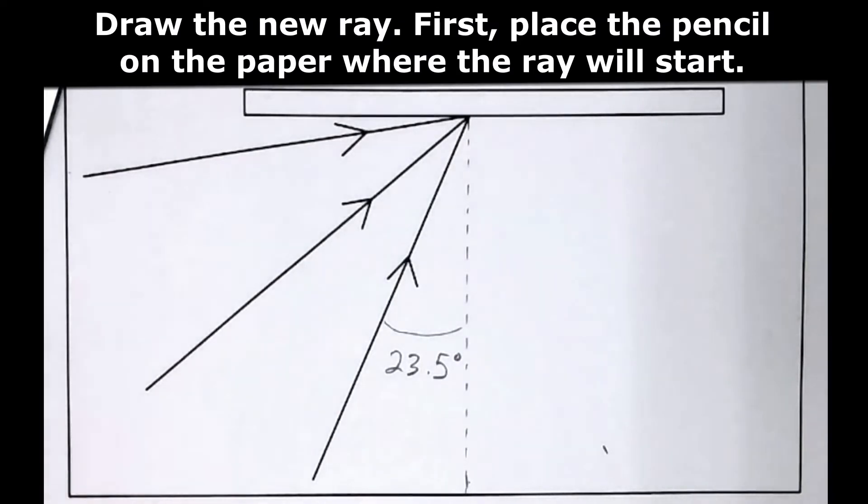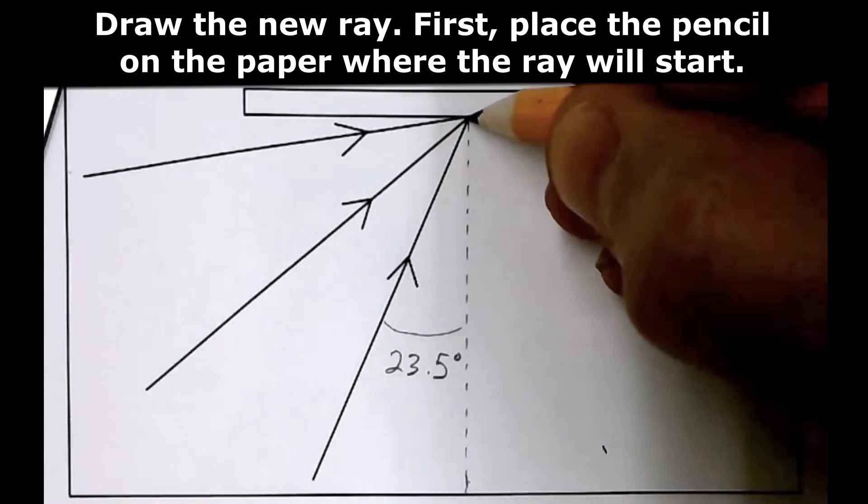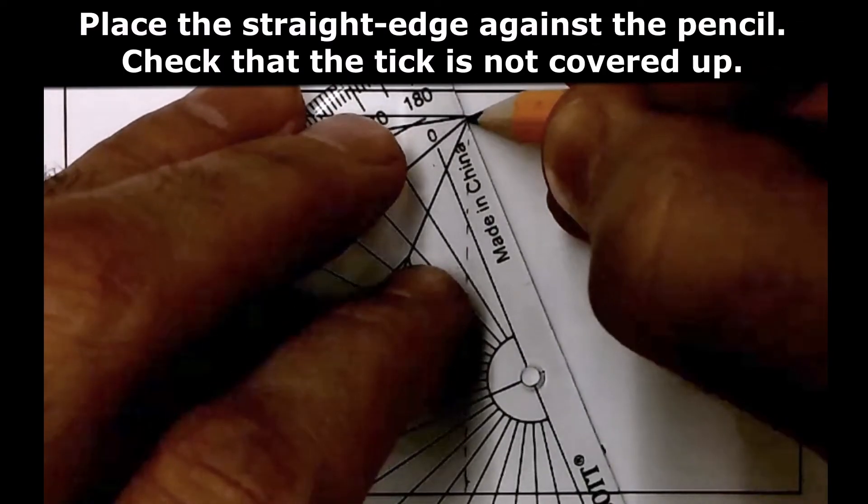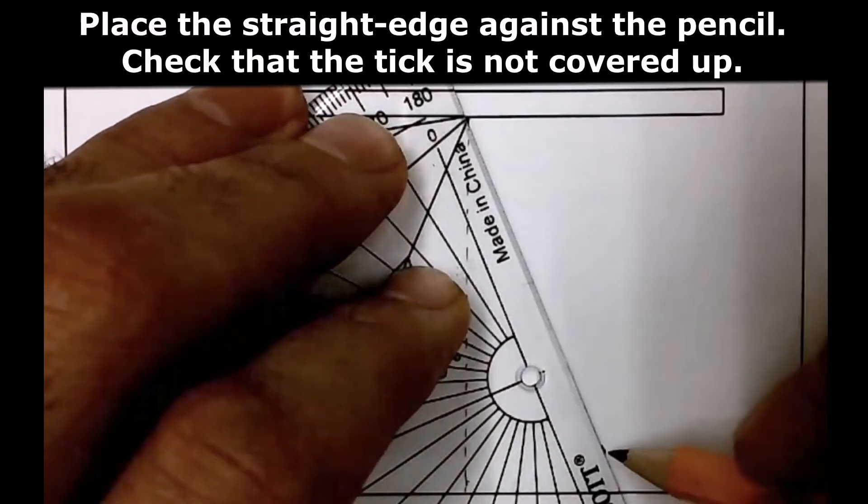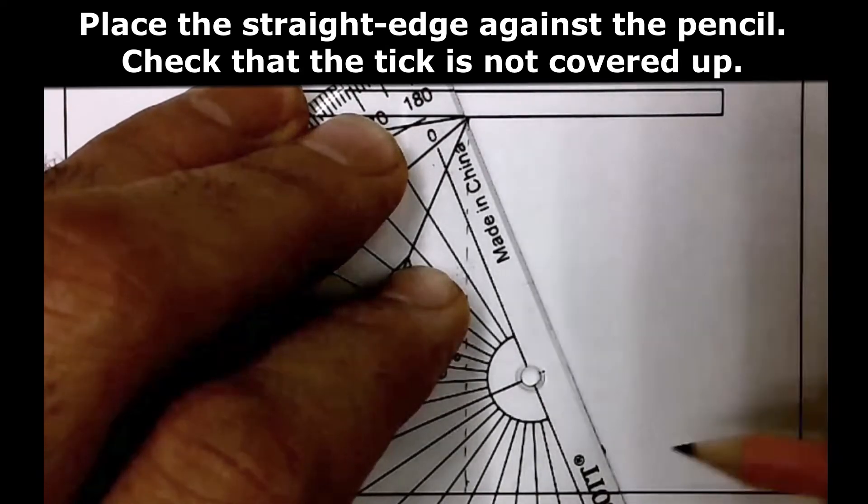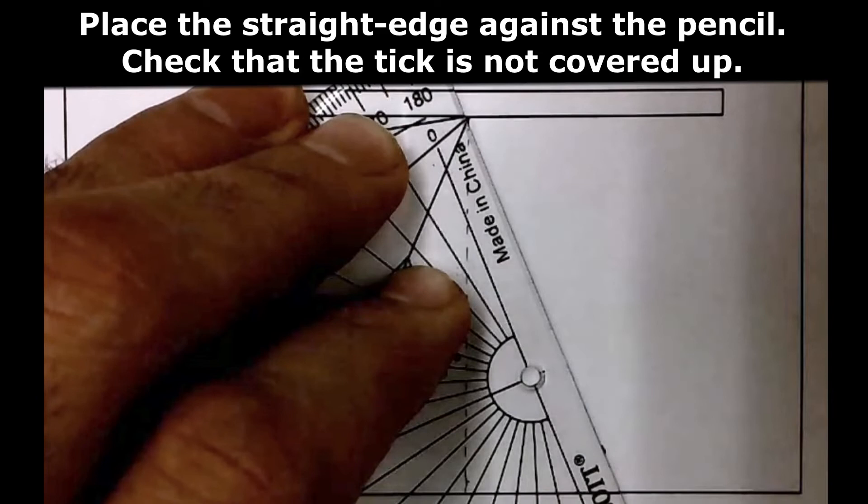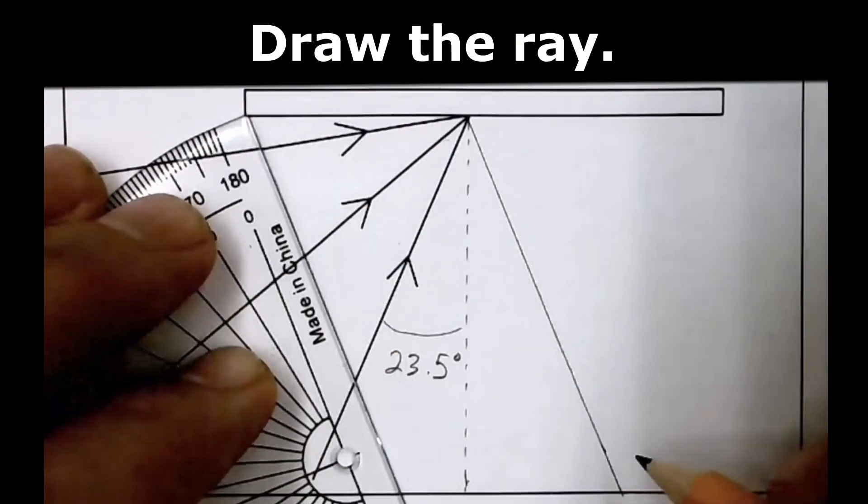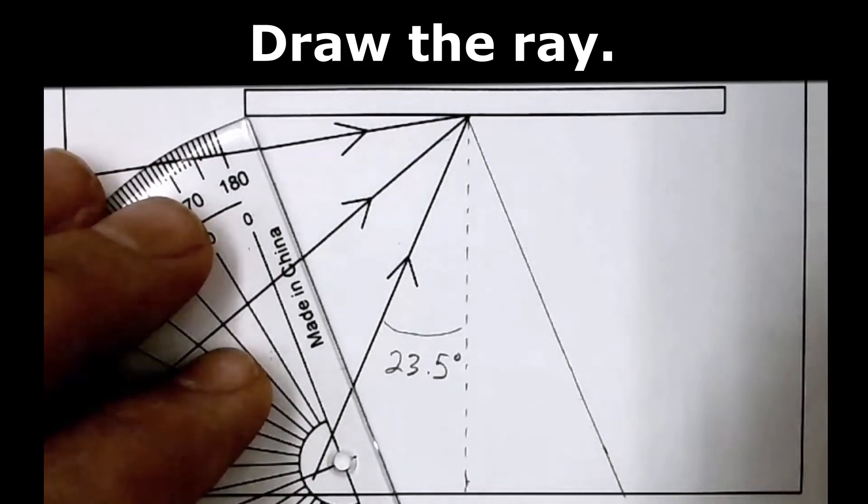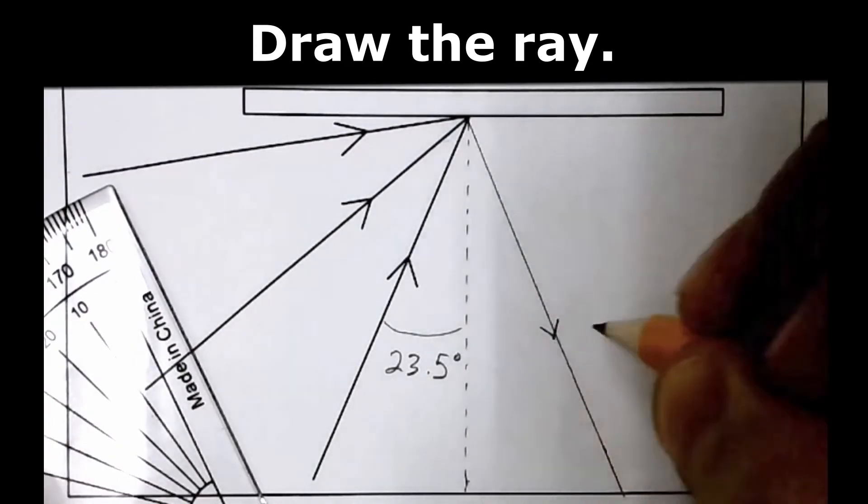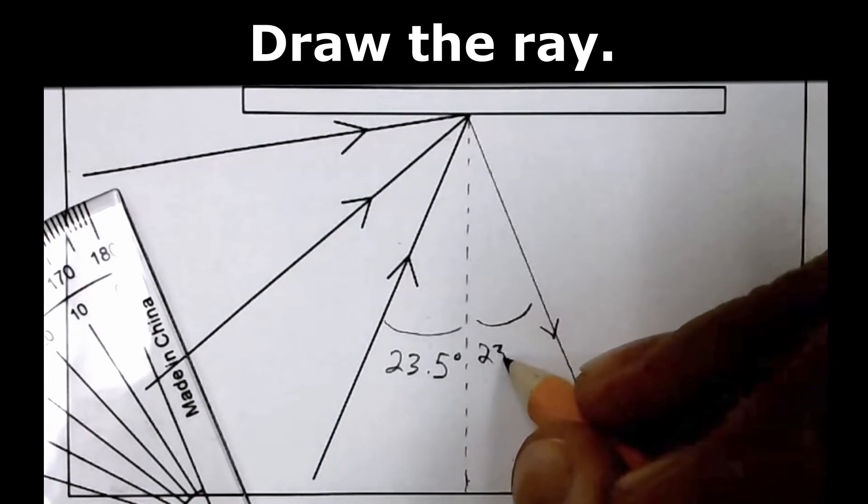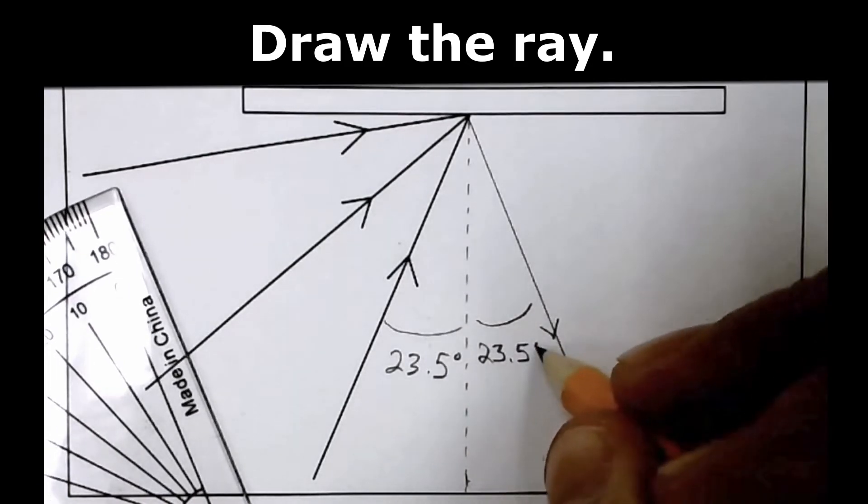Let's draw the ray. Remember our good technique. Position our pencil right at the point where we want the ray to start and gently touch the ruler to the pencil. Make sure this tick is just to the side of the straight edge surface. And now we draw our reflected ray. You see that passed right through my tick mark. And so this angle of reflection will also be 23.5 degrees.